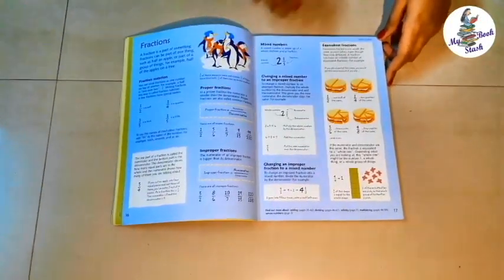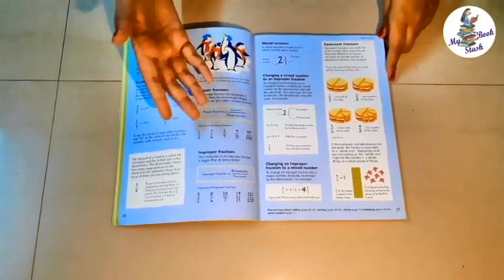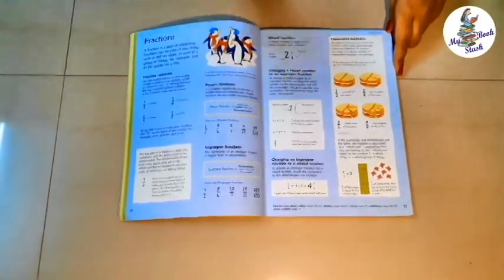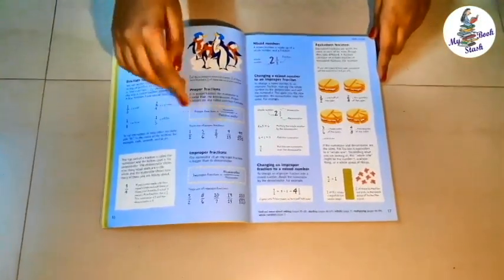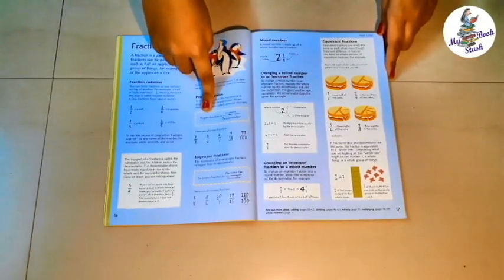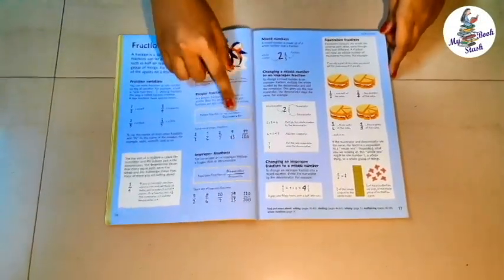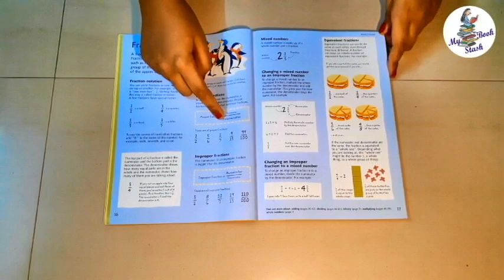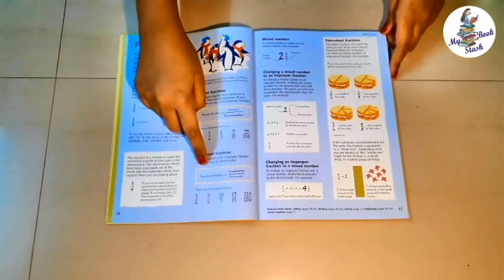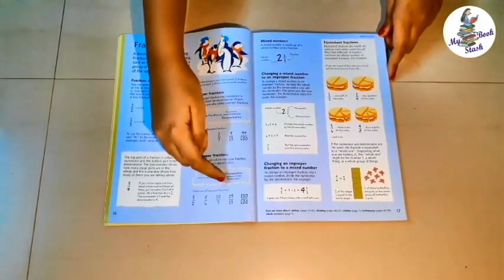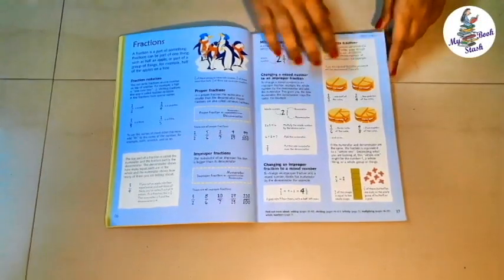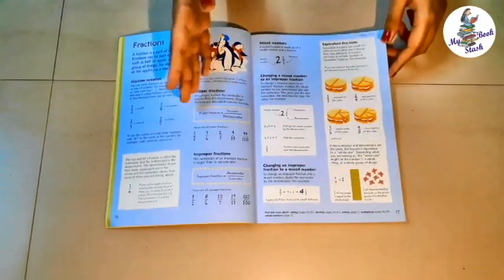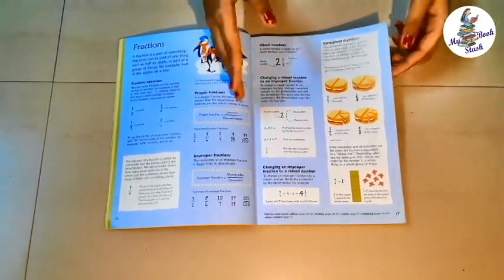For example, in fractions, everything is explained right from the basics. Now if we look at this picture, we know that in a proper fraction, numerator is small and denominator is big. And in improper fraction, numerator is big and denominator is small. This makes it very easy to remember while solving actual sums in school.